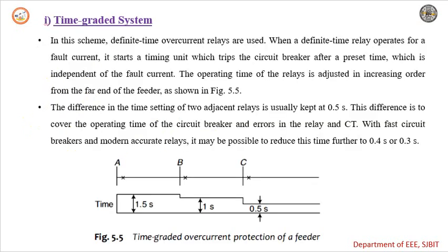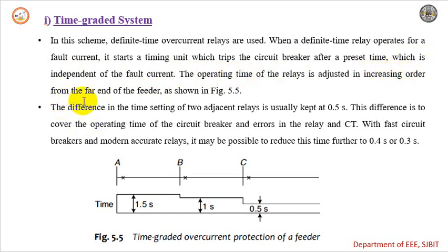In the time graded system, definite time overcurrent relays are used. When a definite time relay operates for a fault current, it starts a timing unit which trips the circuit breaker after a preset value. The operating time is independent of the magnitude of the fault current, and the operating time of the relays is adjusted in increasing order from the far end of the feeder.